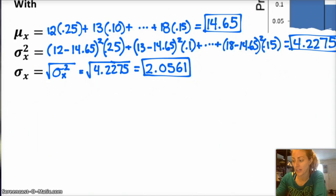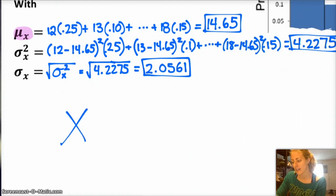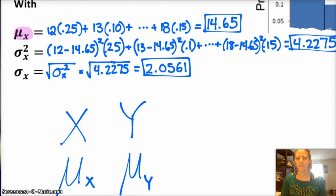Hey, FYI, notation-wise, this mu sub x is important. It will be more important later when we're doing distributions of means, sampling distributions. But, for now, just make sure that you're specifying mu sub x because our random variable is x and so we're taking the mean of x. Okay, if our random variable is y, label it as the mean of y.